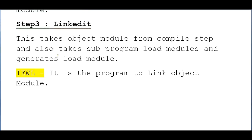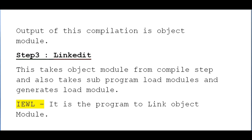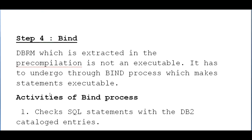Step three is link edit. This step takes the object module from the compile step along with any sub-program load modules and generates a load module. The program used to link the object module is IEWL. At this stage both the object programs and the DBRM are linked together.